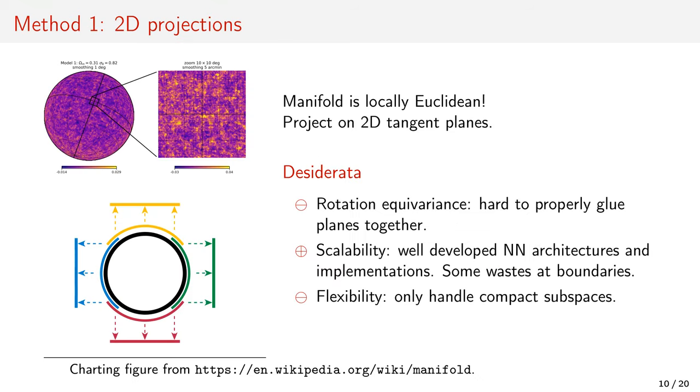One method is to recognize that manifolds are locally Euclidean. You could project the data onto tangent planes and use classical CNNs. Those will, however, hardly be rotation equivariant. They would, however, scale well, as those architectures are well developed and their implementations are highly optimized.